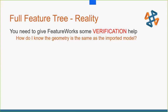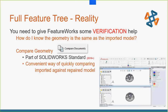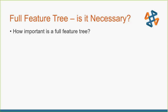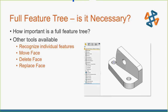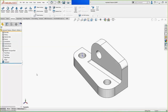We gave FeatureWorks some help, then more help, then verification help using Compare Geometry to confirm the same features, volume, and geometry as the original imported model. Now I want to close with a question: is a full feature tree really necessary? It feels like we want it because that's what we do every day in SOLIDWORKS, but how important is it when we import these models? We have some other tools available if a full feature tree isn't necessary, and probably most of the time it isn't. Let's take a quick look at recognizing individual features and using Move Face, Delete Face, and Replace Face.